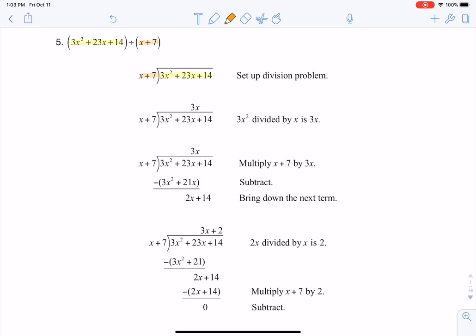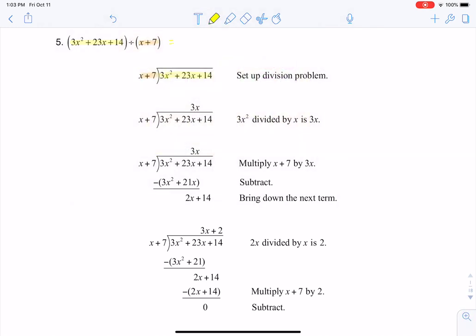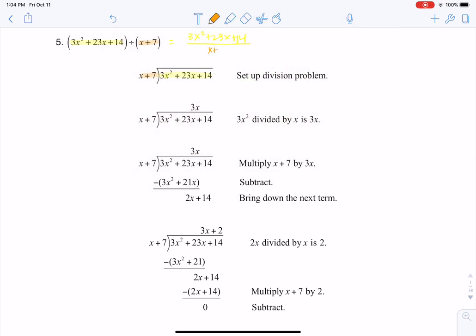I say numerator and denominator because if I were to rewrite this, it would be 3x squared plus 23x plus 14 over x plus 7. And once you're here, what always drives this long division are the lead terms, and really the lead terms in any polynomials are what's driving the car, if you will.